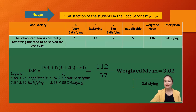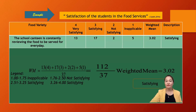Here is an example from an actual study on students' satisfaction with food services. We have a statement with a 4-point Likert scale: 'The school canteen is constantly reviewing the food to be served every day.' The scale is: 4 - Very Satisfying, 3 - Satisfying, 2 - Not Satisfying, 1 - Inapplicable. Results: 13 responded Very Satisfying, 17 Satisfying, 2 Not Satisfying, and 5 Inapplicable.